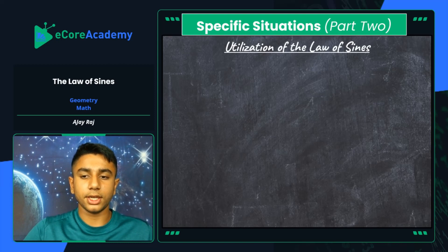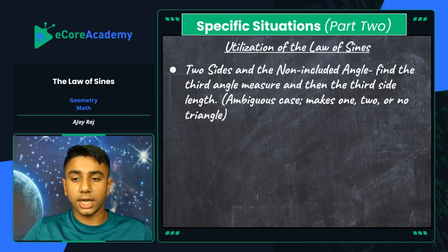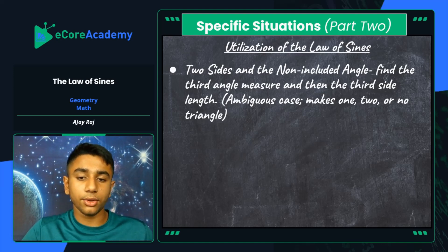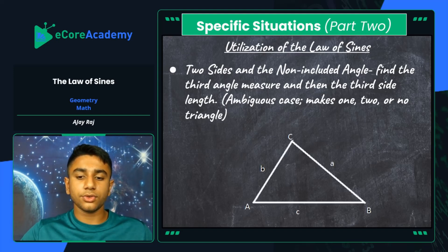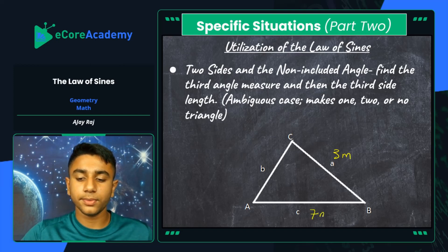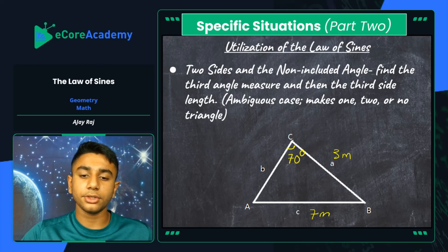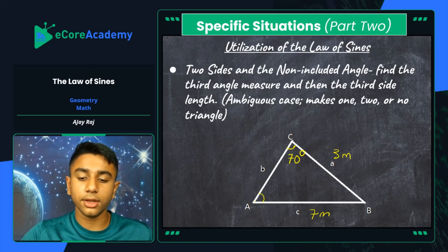Specific situations, part two. When you're given two sides and the non-included angle, find the third angle measure and then the third side length. The non-included angle isn't directly related to the equation, so you need to find the third side. This also introduces ambiguous cases — situations that can yield one, two, or no triangles. For example, if we're given sides of 3 meters and 7 meters and angle C = 70°, we use the ratios to find the missing angle and correlate it with the given sides.